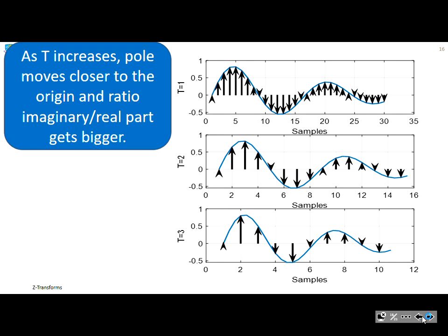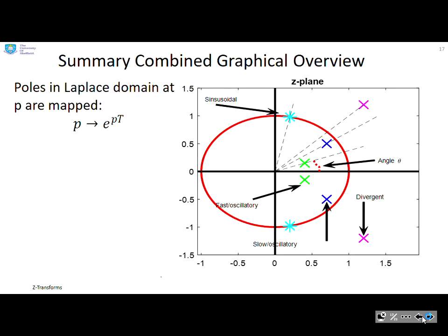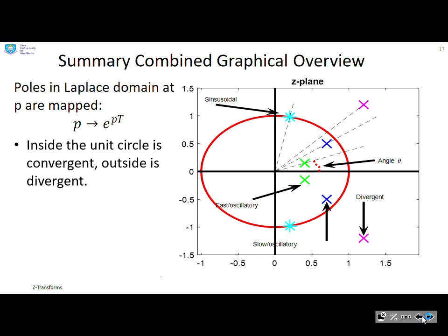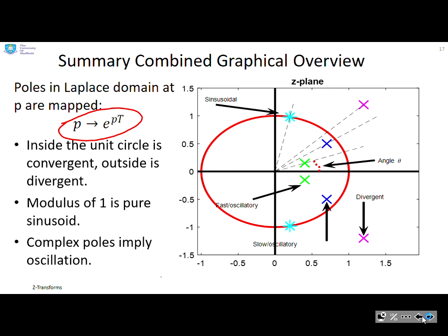The graphs confirm this: with the same underlying signal sampled at times one, two, and three, the phase change between samples becomes much larger and the decay rate per sample is much quicker as the sampling time increases — the same decay is achieved with three times fewer samples. In summary: a pole P in the Laplace domain maps to a pole e to the P·T in the Z-domain. Inside the unit circle is convergent, outside is divergent, a modulus of one is a pure sinusoid, and complex poles imply oscillation.